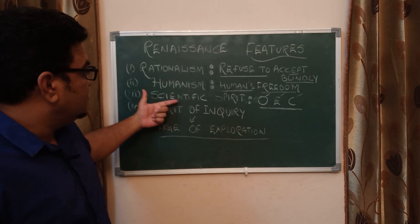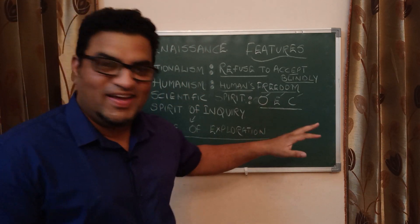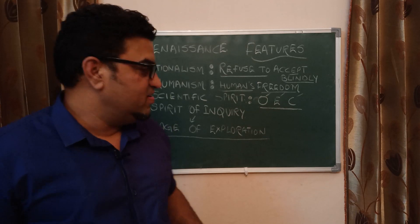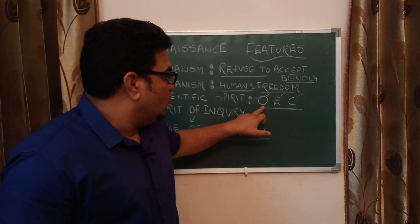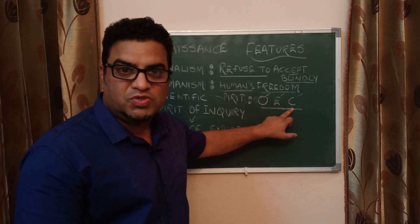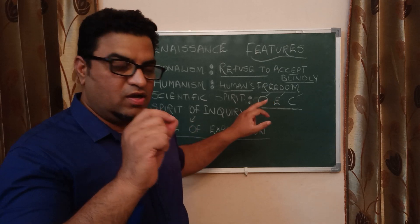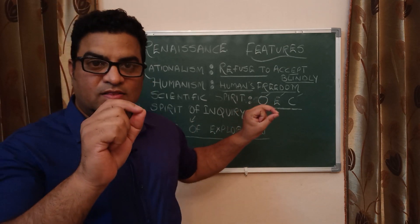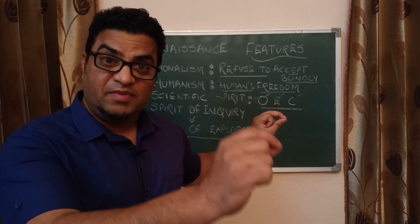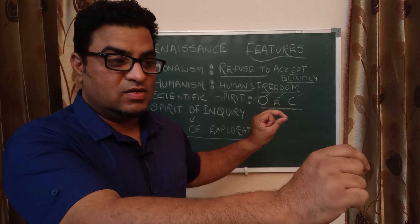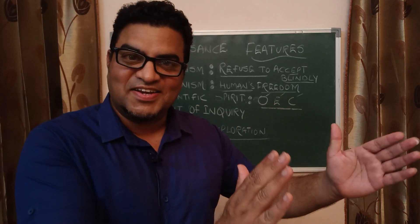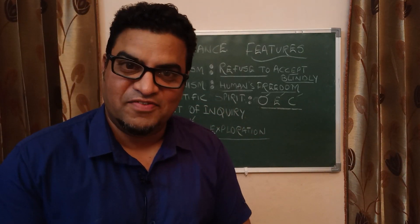The third feature is the scientific spirit. For that I have written OEC — O means observe, E means experiment, and C means conclusion. Before coming to any sort of conclusion, the scientific spirit says that you have to observe it, experiment it, then come to a conclusion. If you are following these steps — observe, experiment, and conclusion — it means you are following a scientific spirit.